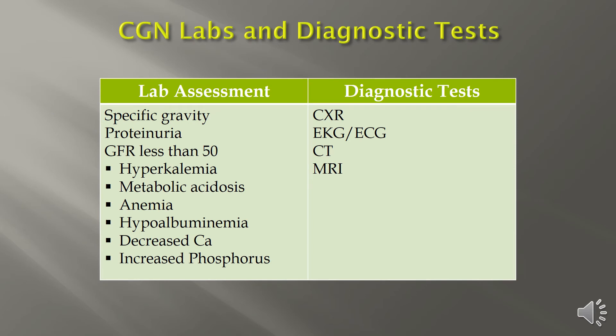With chronic glomerular nephritis, key labs include specific gravity — which rises when urine is more concentrated — significant proteinuria, and a GFR less than 50. Patients will be hyperkalemic, raising cardiac concerns, and will show metabolic acidosis, anemia, low albumin, low calcium, and elevated phosphorus. Diagnostically, chest x-rays can assess kidney size, EKGs monitor potassium-related cardiac changes, and CT scans or MRIs provide a more detailed picture of the kidneys.